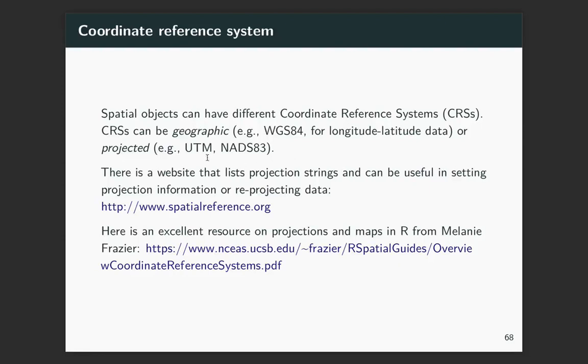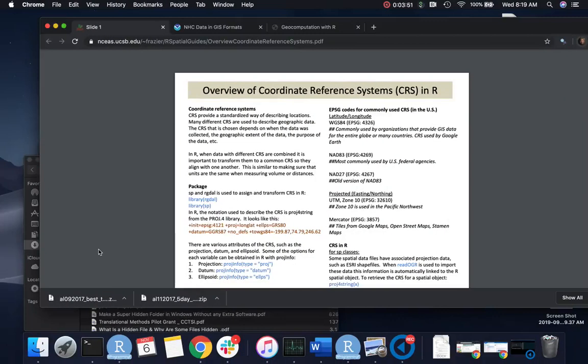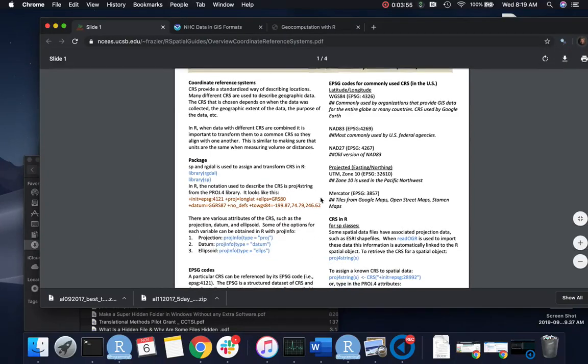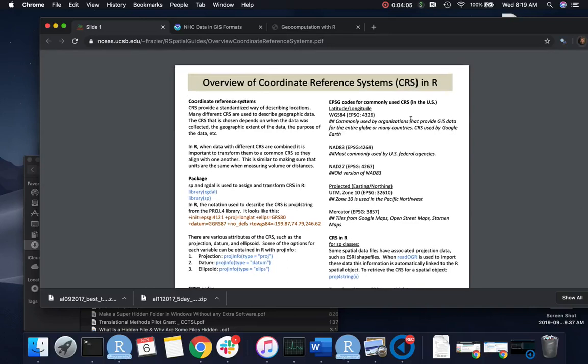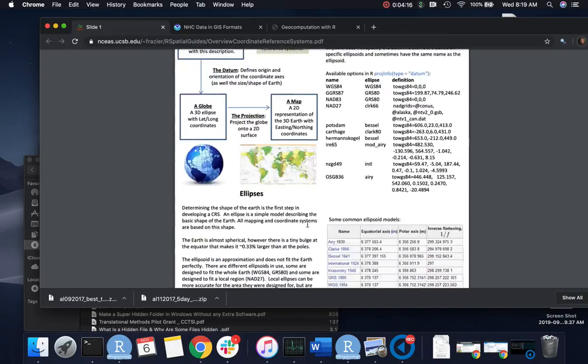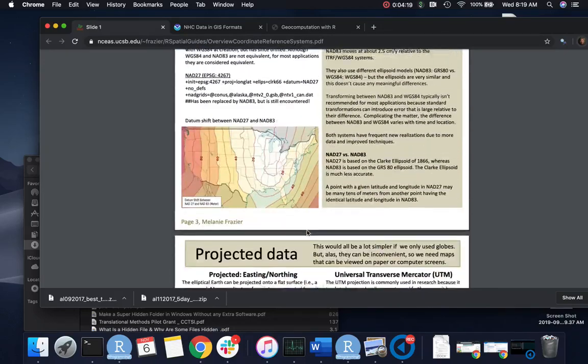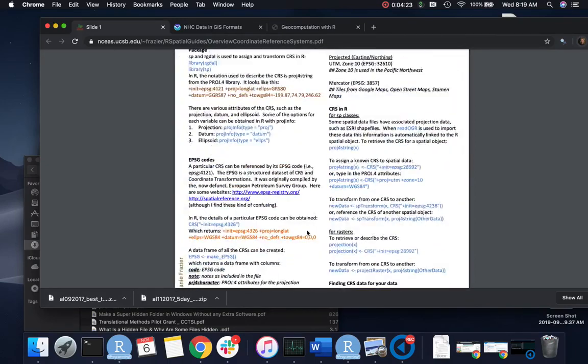So spatial objects can have different CRSs, and they can be either geographic, like the WGS84 for longitude latitude, or they can be projected. So these are some examples, UTM or NADS83. I've put a site to a website that has projection strings that can be useful in projecting or reprojecting data. And then there's also a really excellent reference on projections and maps in R from Melanie Frazier. So I'll go to that. This is that information. And you can see it has some different EPSG codes for CRS. For the data that we're using today, it's going to be this 4269, which is often used for federal agencies. But then if you're using latitude and longitude and it's coming from something that's showing the entire globe or multiple countries, it's likely going to be using this code. So this is a short document that goes through and gives a lot of information on this, and I highly recommend that you read it if you plan to be using some mapping for your own research in R.